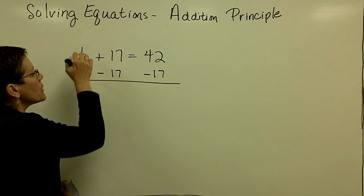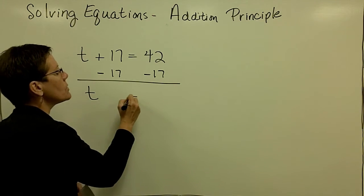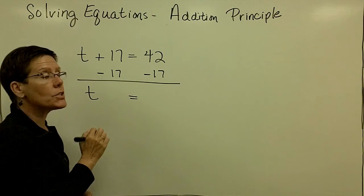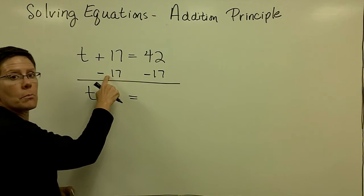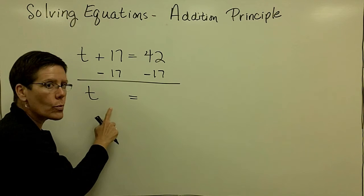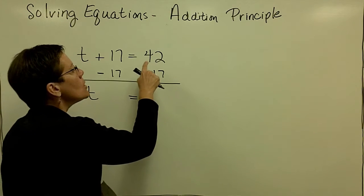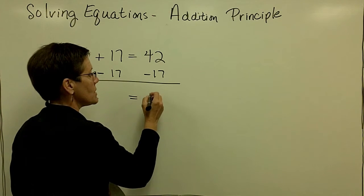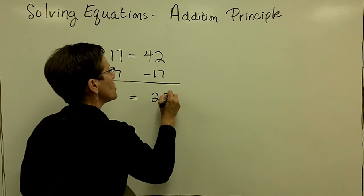So that leaves this variable t all alone now on the left-hand side of the equation. Again, this plus 17 and minus 17 add to be 0. Don't write that down, it becomes confusing. And then 42 minus 17 is equal to 25.